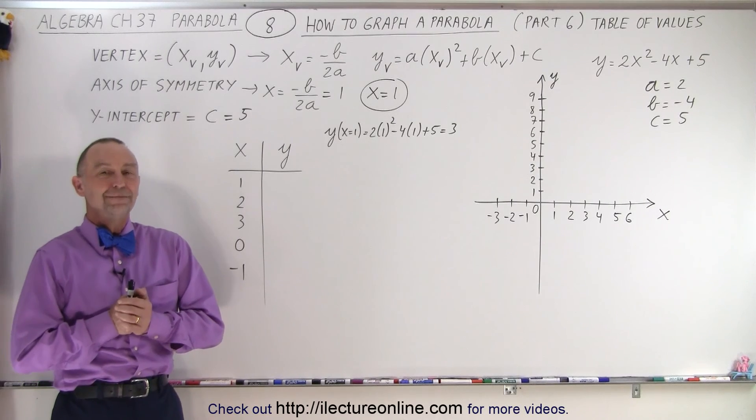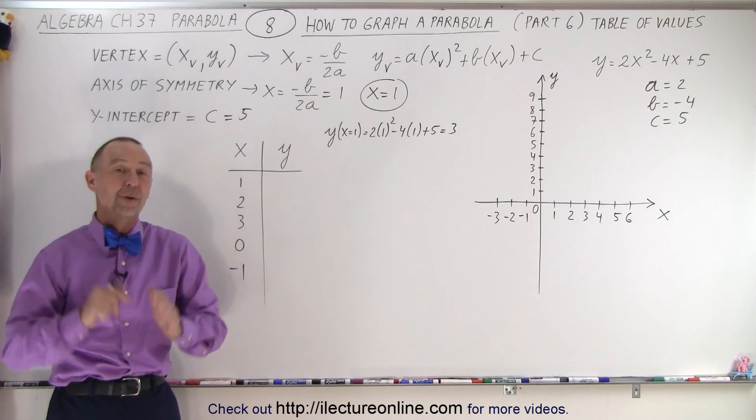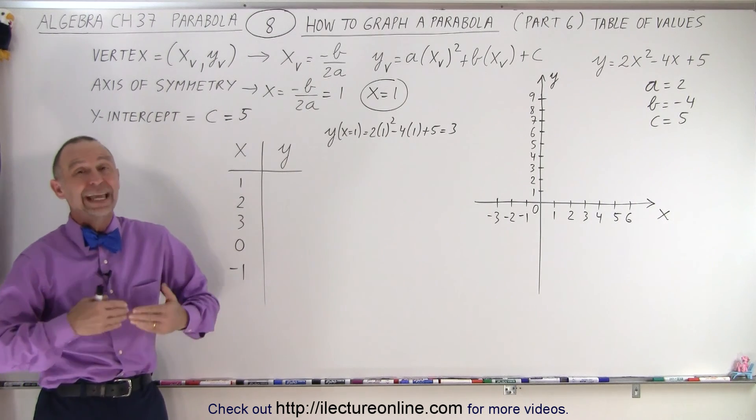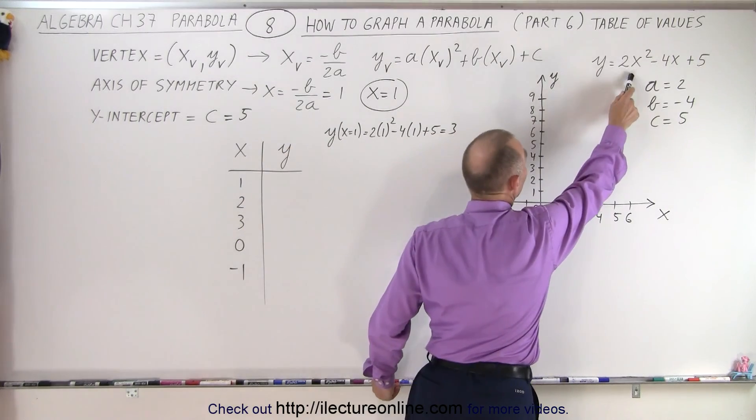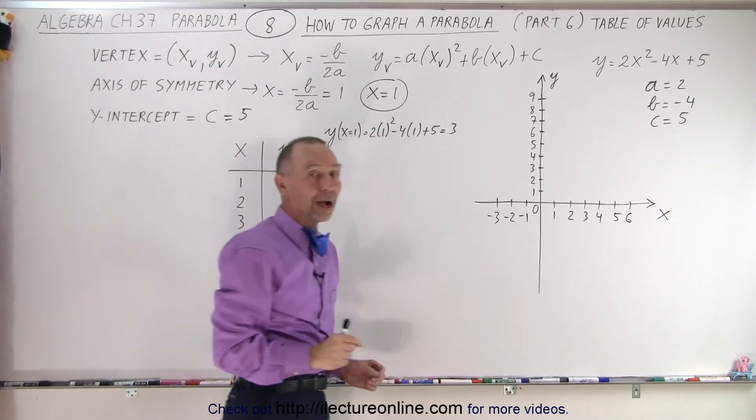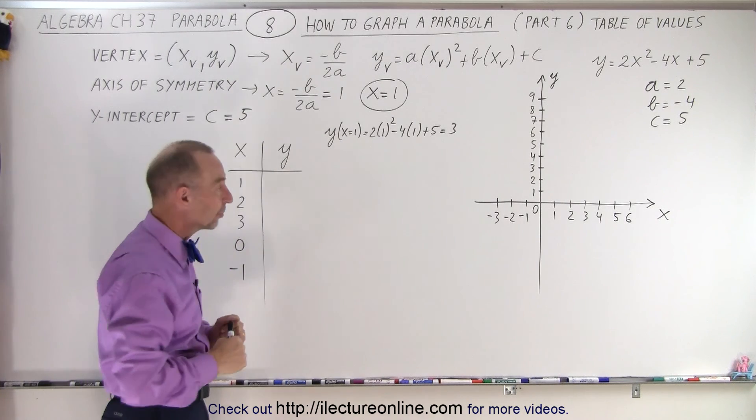Welcome to our lecture online. Now the one method that always works on any sort of graph is what we call the table of values method. In other words, you plug in certain values for x and you get the corresponding value for y. Then you plot those points and simply connect the dots.